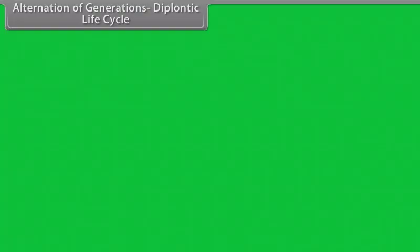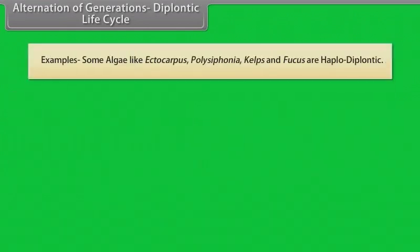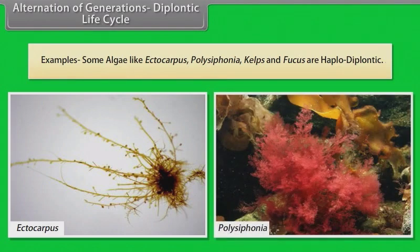In diplontic life cycle, the diploid sporophyte is the dominant photosynthetic independent phase of the plant. It alternates with multicellular saprophytic autotrophic independent but short-lived haploid gametophyte. Examples: some algae like Ectocarpus, Polysiphonia, kelps and Fucus.